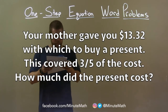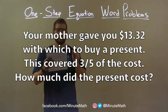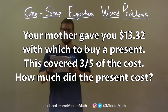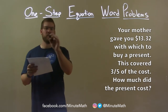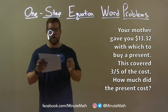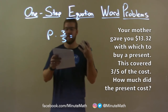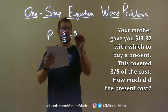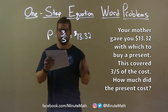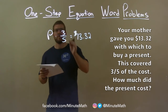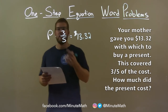Your mother gave you $13.32 with which to buy a present. This covered 3/5 of the cost. How much did the present cost? The cost of the present, P, times 3/5 will equal the amount of money your mother gave you, $13.32. We have our equation and need to solve for P.